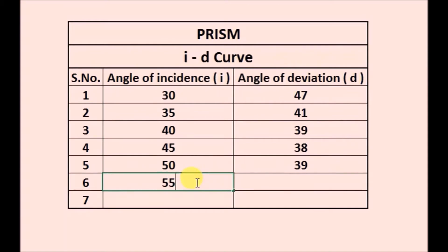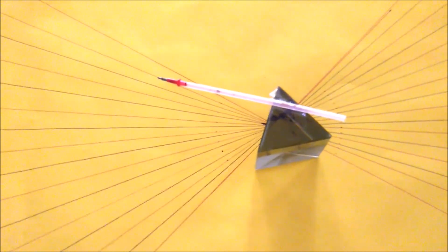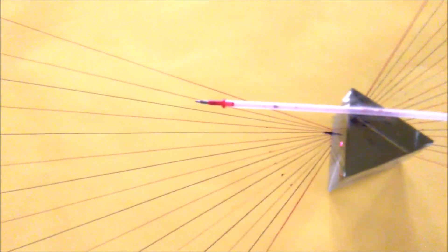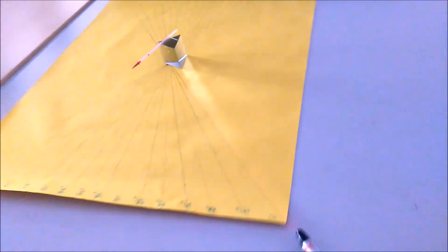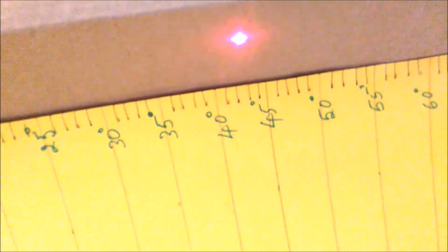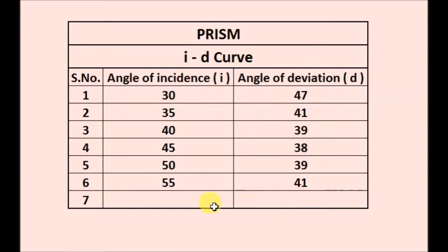For an angle of incidence of 55 degrees, the angle of deviation is 41 degrees. Now the prism position is adjusted along the red line for 60 degrees. So the angle of incidence is 60 degrees. Let us note down the angle of deviation — it is 43 degrees. So for I equal to 60, D value is 43.